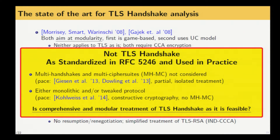But — and it's a big but — all of this work doesn't really look at real TLS; it's not the protocol that is standardized in the RFC or used in practice. There are two aspects that are lacking. One is that they don't analyze multi-handshake, multi-cipher suite security — they always look at the single handshake and single cipher suite in isolation. There are some attempts in that direction, such as one that looks at renegotiation and another that looks at multi-cipher suites but only for SSH, and for TLS they only have negative results. Moreover, the work is often monolithic and works on tweaked protocols, so it's not even clear whether a comprehensive and modular treatment of the TLS handshake is feasible right now.